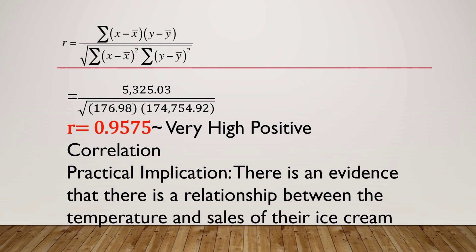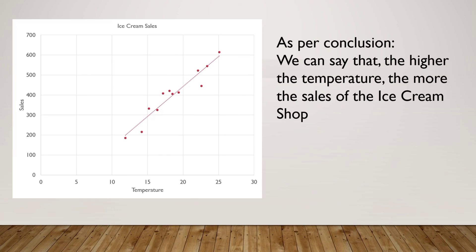Going back to the problem, the practical implication is that there is evidence of a relationship between the temperature and ice cream sales. Looking at the scatter diagram, the horizontal axis is temperature and the vertical axis is sales. The dots are near the line, so we can conclude that the higher the temperature, the more ice cream the shop sells.